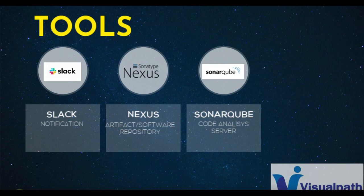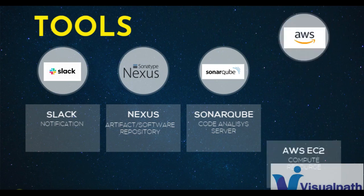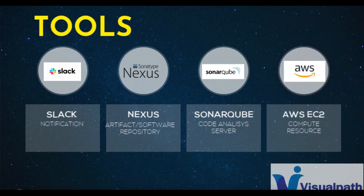To set up these servers — the Jenkins server, Nexus server, and SonarQube server — we're going to use the AWS platform. We'll use AWS EC2 instances. On those EC2 instances, we'll set up the Jenkins server, Nexus server, and SonarQube server.